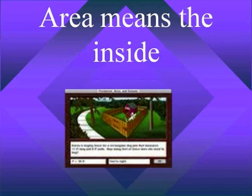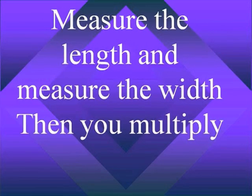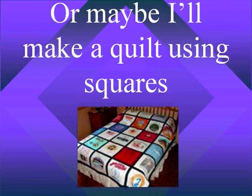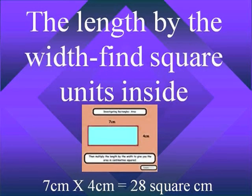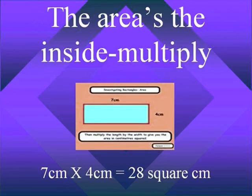Area means the inside. Cover the surface that's inside. Measure the length and measure the width, and then you multiply. Maybe I'll buy new carpet, or maybe I'll make a quilt using squares. Multiply the length by the width — find square units inside. It's the area.